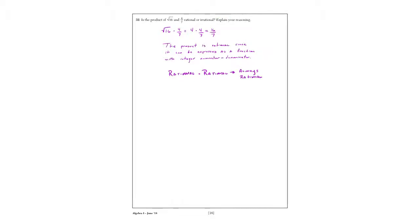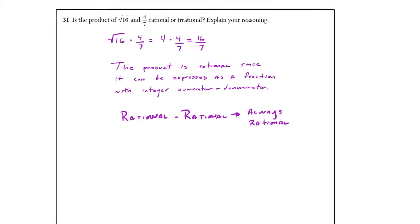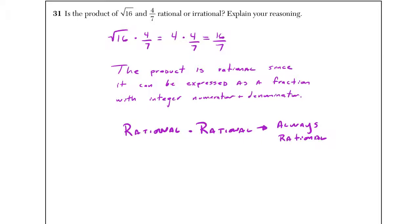31. Classic rational, irrational. How many times have we seen this? In 31, once again we see the number 4 7ths, coincidentally, is the product, multiplying, of these two numbers, rational and irrational. So let's think about what happens.